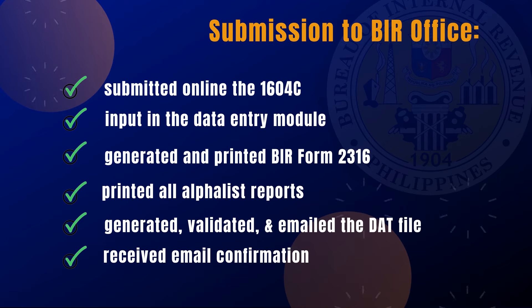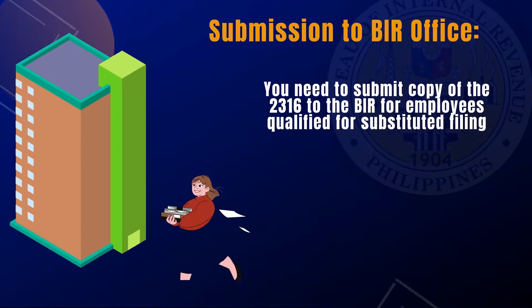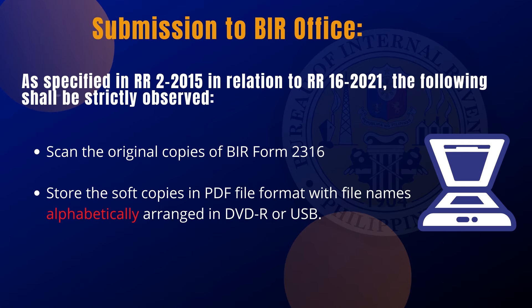Now that you have submitted online the 1604-C, input the data in the Entry Module, generated and printed 2316, printed all Alphalist reports, generated, validated, and emailed the .dat file, and received email confirmation — what to do next? You still need to submit a copy of the signed 2316 to the BIR. The answer is soft copy. As specified in RR2-2015 in relation to RR16-2021, scan the original copies of BIR Form 2316 through a scanning machine or device. Store the soft copies in PDF file format with file names alphabetically arranged in DVD or USB.